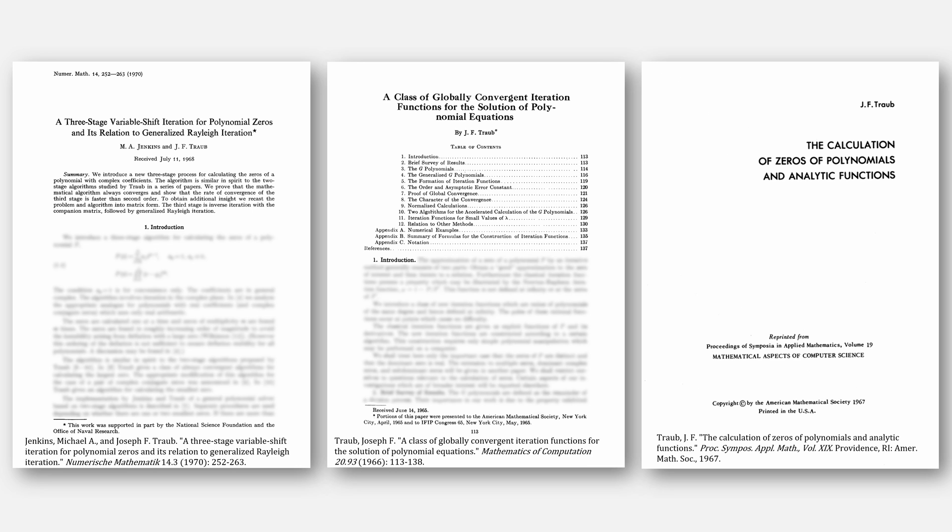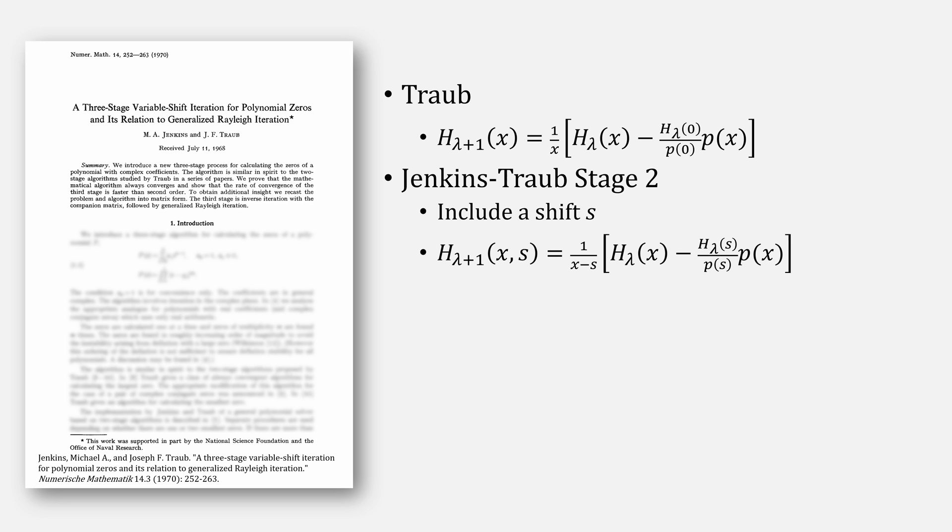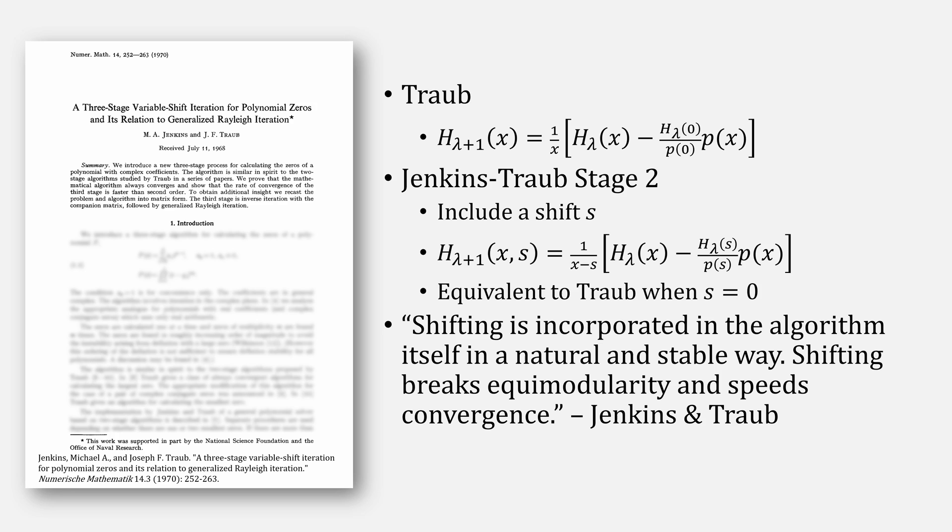This is where we come to Jenkins and Traub's paper. Start with Traub's h equation and make one small change in the second stage of our three-stage approach, including a shift s. So our h equation looks like this now. One thing to note is that this is actually equivalent to Traub when you pick an s equal to zero. The authors write, shifting is incorporated in the algorithm itself in a natural and stable way. Shifting breaks equimodularity and speeds convergence.